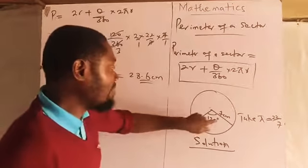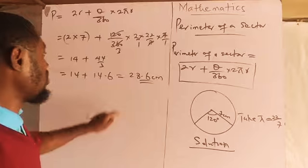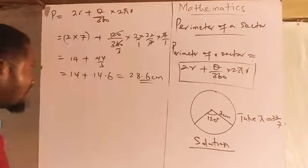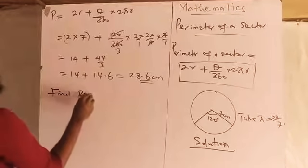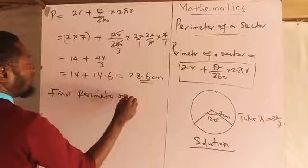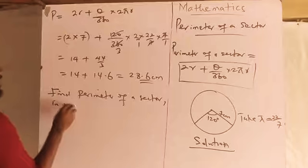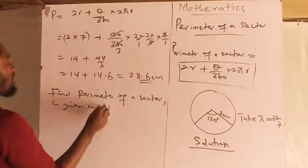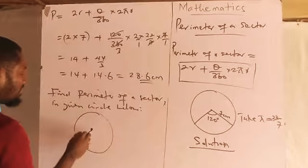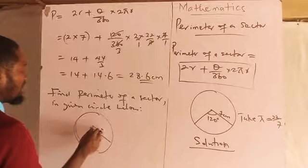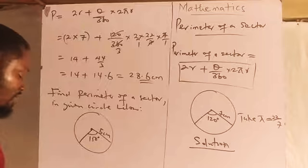So this circle with an angle of 120 degrees and a radius of seven has a perimeter of sector equal to 28.6 centimeters. Now find the perimeter of a sector in the given circle below, where you have 150 degrees and a radius of 5 centimeters.